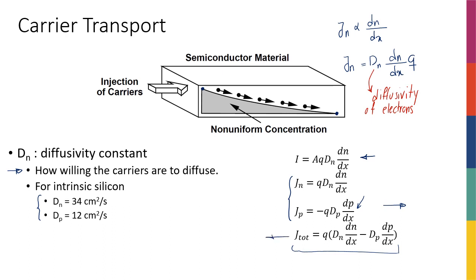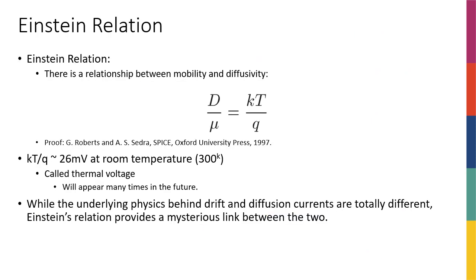So while the underlying physics behind drift and diffusion currents are totally different, it's interesting to see that there's a relationship between the diffusivity of a charge carrier and the mobility of a charge carrier, which we call the Einstein relation. So the Einstein relation tells us that if I take the diffusivity of a carrier divided by mu, the mobility of that carrier, let's say Dn over mu n, or Dp over mu p, it's going to be actually equal to, this fraction is going to be equal to kT over q, k being the Boltzmann constant.